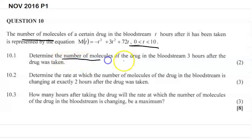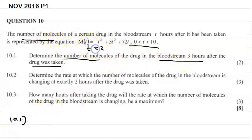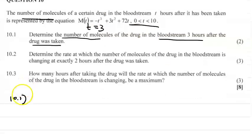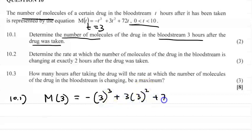Determine the number of molecules of the drug in the bloodstream three hours after the drug was taken. Our formula is given in m(T), which is the number of molecules. So for three hours, all we have to do for 10.1 is substitute T = 3 into our given equation. So m(3) = -(3)³ + 3(3)² + 72(3).